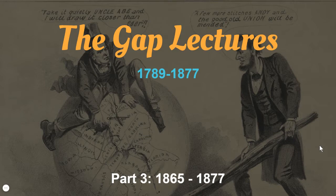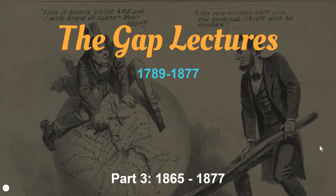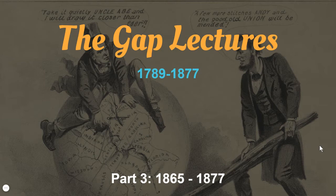I'm going to make the argument to you, based on the evidence we see, that in 1877 when Reconstruction ends, the institution of slavery is gone from this nation only in name. Slavery, in fact, persists by a different name and by different methods. By 1877, the work done to bring about racial equality is ended, reversed in many cases, and leads to a system we today refer to as Jim Crow, which will persist until the Civil Rights Movement of the 20th century.